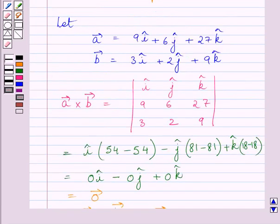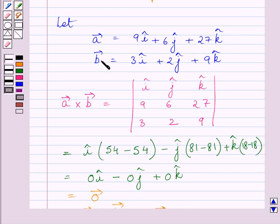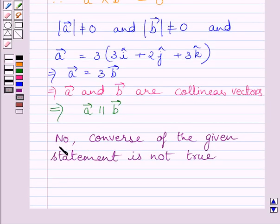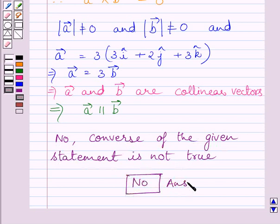Clearly, if we consider two non-zero collinear vectors and find their cross product, their cross product equals 0. Or we can say if A vector is parallel to B vector, then the cross product of the two vectors is equal to 0 vector. So the converse of the given statement is not true. This is our required answer. This completes the session — hope you understood the solution. Take care and keep smiling.